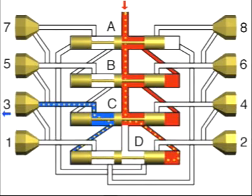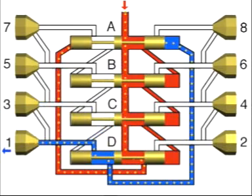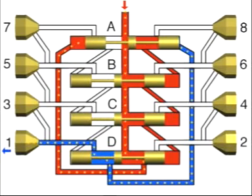In phase 4, piston D opened the junction channel to the left-hand end of piston A. The lubricant flowing in moves piston A to the right, causing the lubricant quantity to be dispensed to outlet 1. In the subsequent distribution sequence, pistons B through D are moved from the left to the right, one after the other.